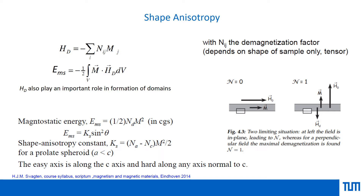Instead of a spheroid, a thin film or needle-like shape can also be considered. If you have an infinite film or infinite needle and magnetization is within the plane, looking at a small area you can see that the demagnetization fields coming outside are very small — almost none — because the sample is considered infinite. On the other side, when you want to apply the magnetization out of plane, you will have very large demagnetization fields.